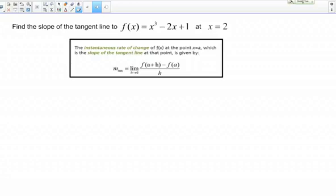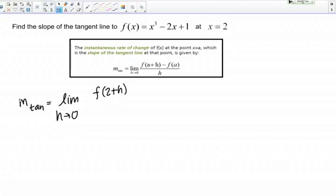Let's just dive right into the problem. The definition here says that the slope of the tangent line at the point x = a equals the limit as h goes to 0 of f(a + h) - f(a) all over h. Here our a = 2. Then the slope of the tangent line in this case is going to equal the limit as h goes to 0 of f(2 + h) - f(2) all over h.